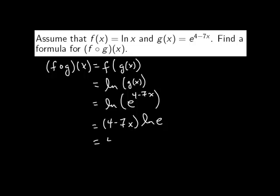But of course the ln of e is 1. So we have the final answer: 4 minus 7x. That is, the composition f composed of g of x is equivalent to the linear function 4 minus 7x.